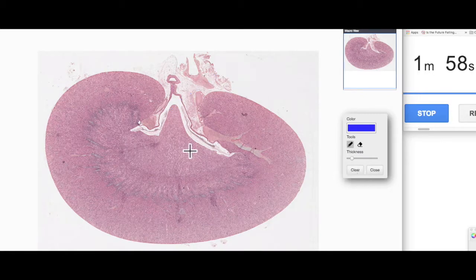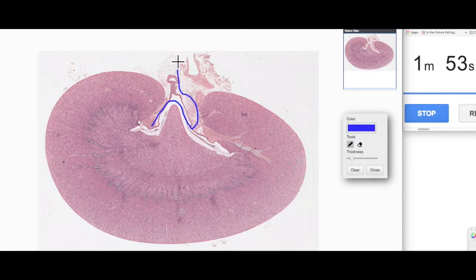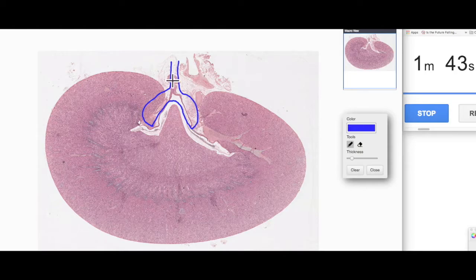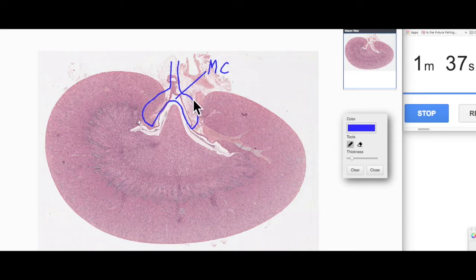Now, collecting that urine is a little cup-like structure referred to as a minor calyx. It looks like a little cup. It's the first region of the urinary system that's lined by urinary epithelium or urothelium. This is the minor calyx draining a lobe of the kidney.